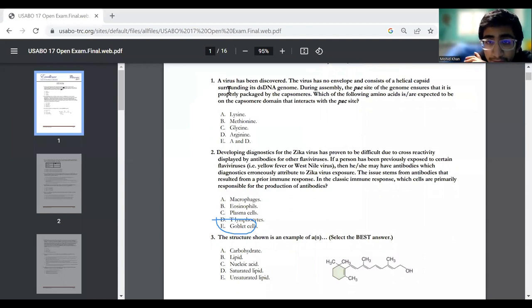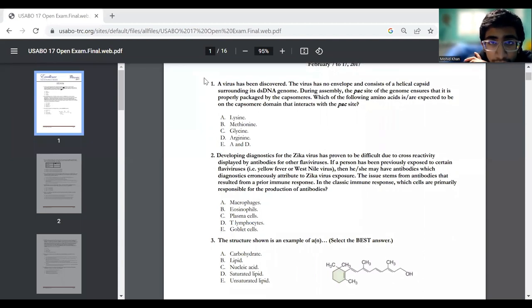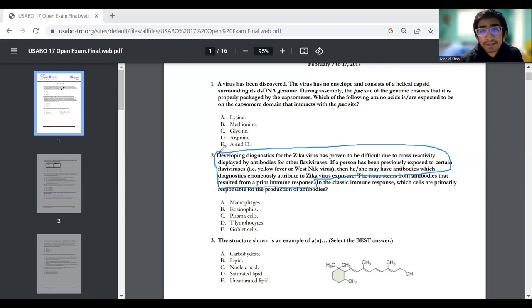Question number two. Developing diagnostics for the Zika virus has proven to be difficult due to cross reactivity displayed by antibodies for other flaviviruses. If a person has been previously exposed to certain flaviviruses, then he or she may have antibodies which diagnostics erroneously attribute to Zika virus exposure. The issue stems from antibodies that resulted from a prior immune response.